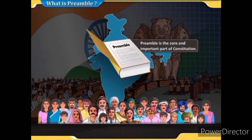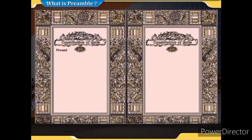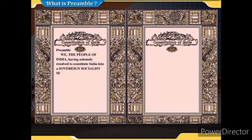The preamble is the core and important part of the Constitution; the Indian Constitution begins with the preamble. The words written in it highlight the soul of the Constitution. The preamble reads: 'We the people of India, having solemnly resolved to constitute India into a sovereign socialist secular democratic republic and to secure to all its citizens justice — social, economic and political...'